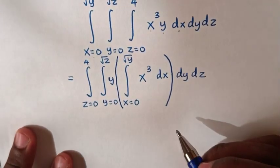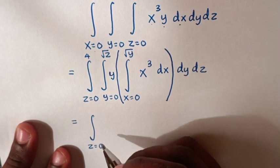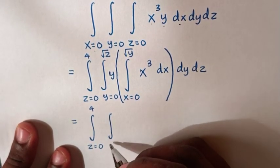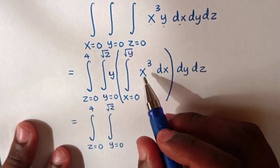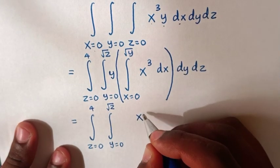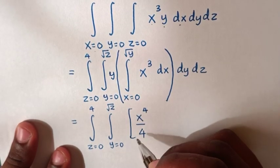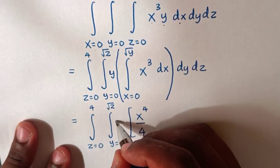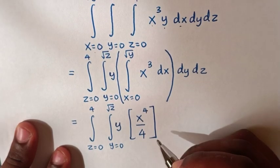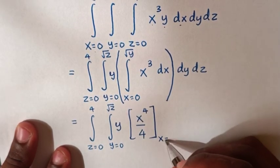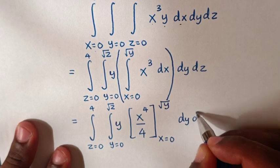We start to integrate the first expression in the bracket. This will be equal to the integral from z equals 0 up to 4, then the integral from y equals 0 up to square root of z. When we integrate x³, it will be x to the power 3+1, which is power 4, over 4. Then brackets — don't forget this y — we will integrate later with respect to y within these limits. So here brackets within the limits of x equals 0 up to square root of y, dy dz.